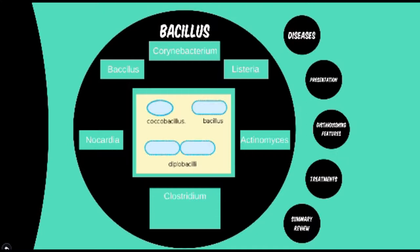The main genera to be discussed in this module are listed, with bacillus being a description as well as one of the genera — they were just a bit lazy on the naming scheme for that one. There's only one main species within each of these genera that is medically relevant, with the exception of clostridium and bacillus. Unlike the preponderance of skin, urinary, and GIT diseases seen in module 1, this module will be more varied, with a higher concentration on the nervous system and tissue necrosis.